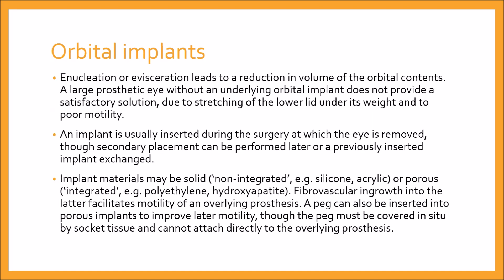Then come orbital implants. Enucleation or evisceration leads to reduction in the volume of the orbital contents. A large prosthetic eye without an underlying orbital implant does not provide a satisfactory solution, due to stretching of the lower lid under its weight and poor motility. An implant is usually inserted during surgery at which the eye is removed, though secondary placement can be performed later, or a previously inserted implant exchanged.